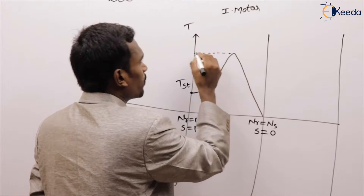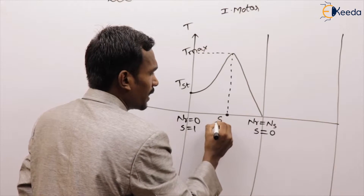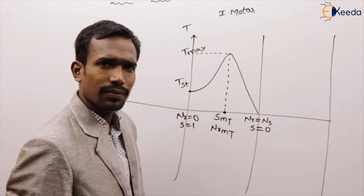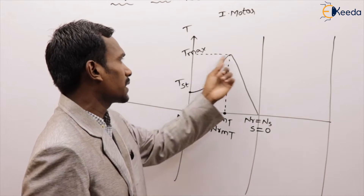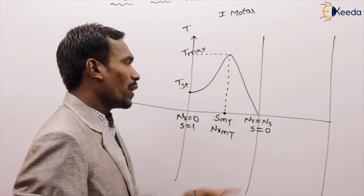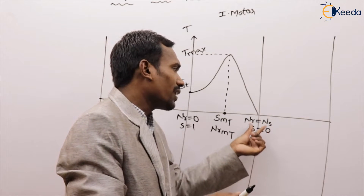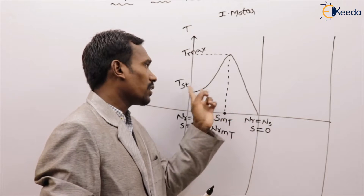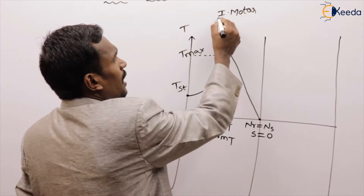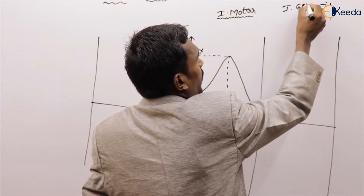From the torque-slip-speed graph, we can identify the maximum torque point. At that condition, we have the slip at maximum torque, the rotor speed at maximum torque, and the maximum torque value. At starting, the speed is 0 and slip is 1. Where nr equals ns, the rotor catches synchronous speed and comes to rest, so torque equals 0 and slip equals 0.